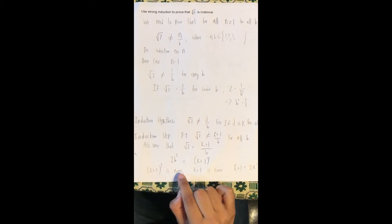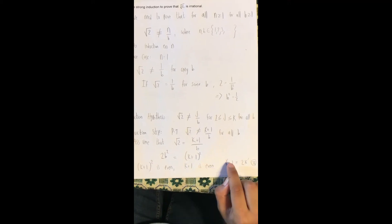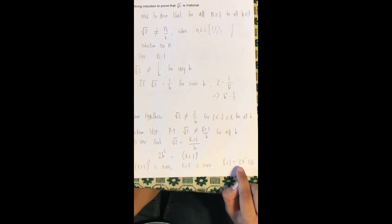k plus 1 the whole squared is even, which means that k plus 1 is even. So k plus 1 can be written as 2 times k prime.